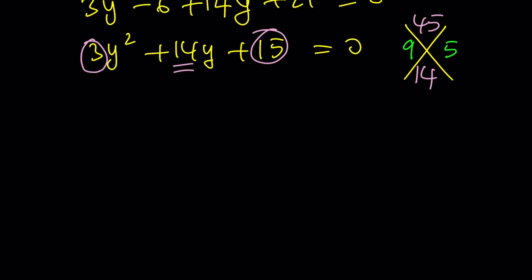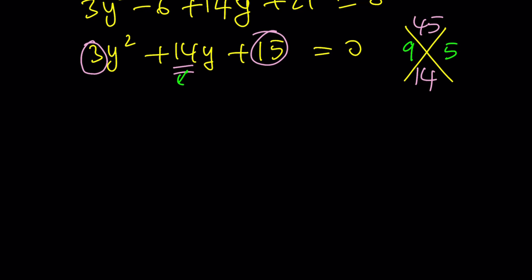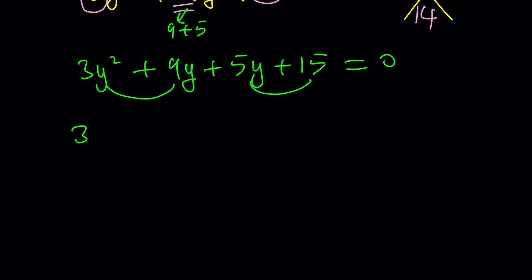And those numbers are 9 and 5, right? Those are easy to find. So that means I'm going to split up my 14 into 9 plus 5. That's what it means. So now, let's go ahead and see how that works. 3y squared plus 9y because 9 plus 5 multiplied by y plus 5y plus 15. Now, this allows you actually to factor this by grouping and get a common factor.